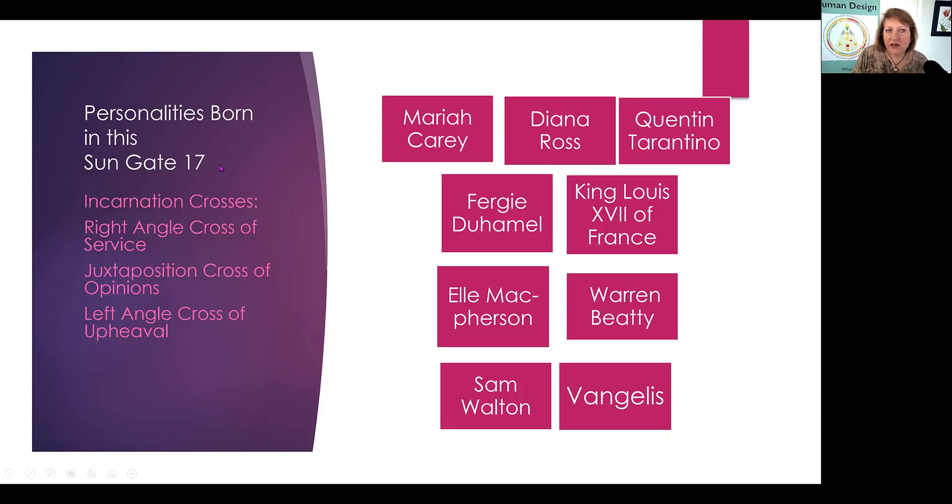So this week in Sun Gate 17, we've got the right angle cross of service, the juxtaposition cross of opinions, and the left angle cross of upheaval. And these are a few of the people who have birthdays this week. There actually weren't as many as usual. And I've decided that instead of doing the history portion, which I usually do next, I'm going to move to just taking one of the personalities who were born in this Sun Gate 17, and just go into a little more depth with them. So this week I chose Diana Ross, and so we'll take a look at her chart.